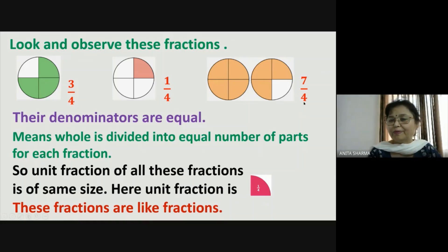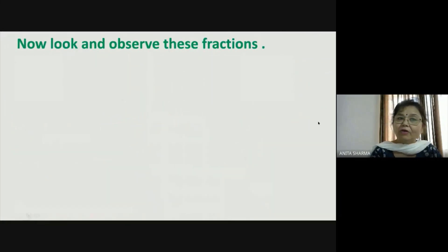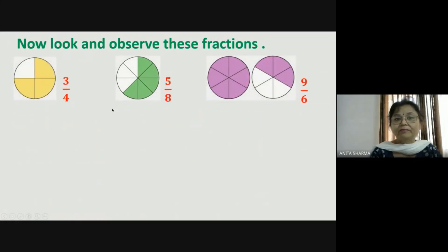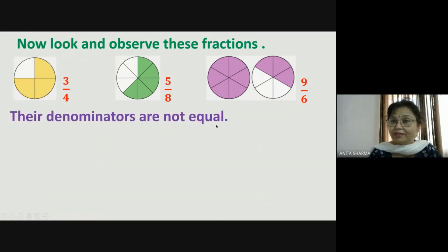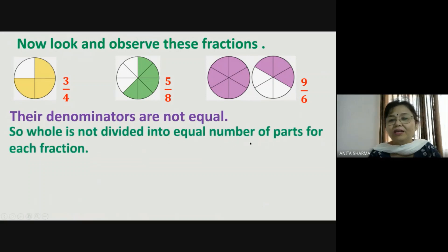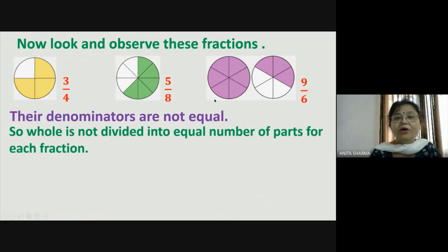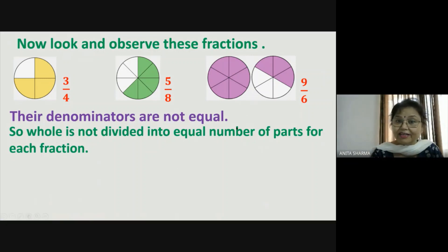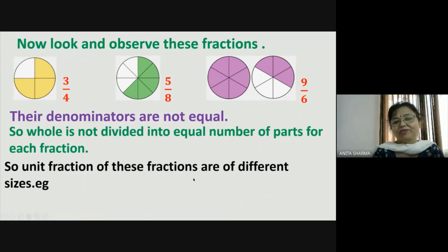Like fractions can be identified by simply checking their denominators — they should be equal. Here denominators are four, four, and four, so they are like fractions. Now look at these fractions: three-fourth, five-eighth, and nine-sixth. Their denominators are not equal. Here the whole is divided into four parts, then eight parts, then six parts — so the denominators are different, meaning the whole is not divided into an equal number of parts.